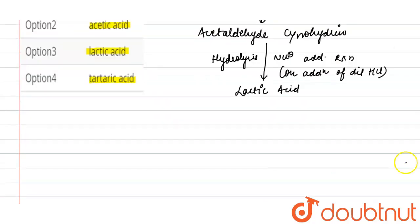You'll see the reaction here: acetaldehyde, that is CH3-C double bond O-H, this is acetaldehyde, treated with hydrogen cyanide, so it will form CH3-CH-OH-CN, this is cyanohydrin. And here it is acetaldehyde.